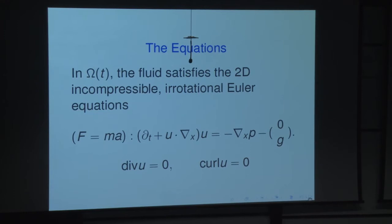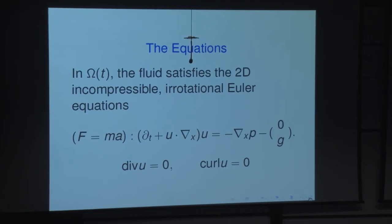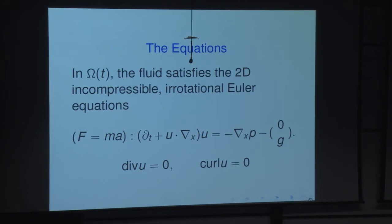Here are the equations. In omega of t, the fluid satisfies the 2D incompressible irrotational Euler equations. The first equation just says F equals ma. If you work in some subject very far from analysis, let me explain what's going on.